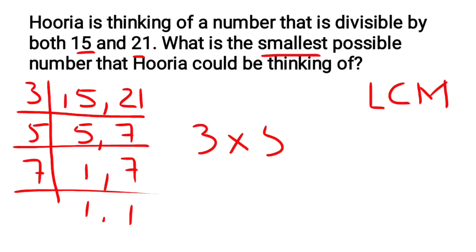So the LCM is 3 multiplied by 5 multiplied by 7. 3 times 5 is 15, and 15 times 7 is 105.